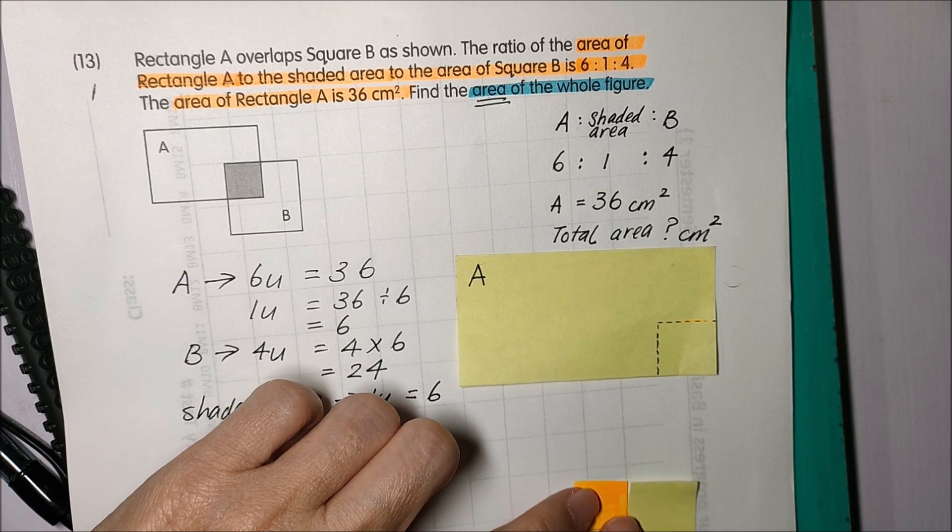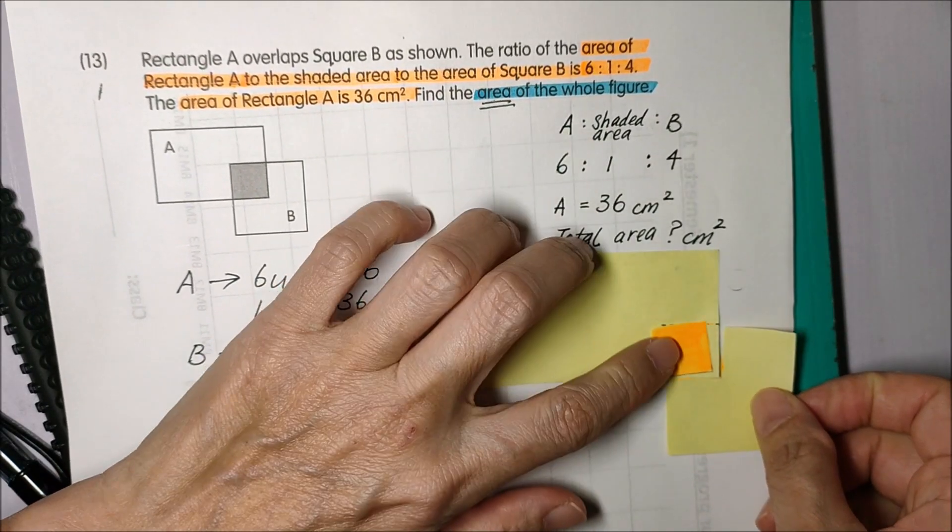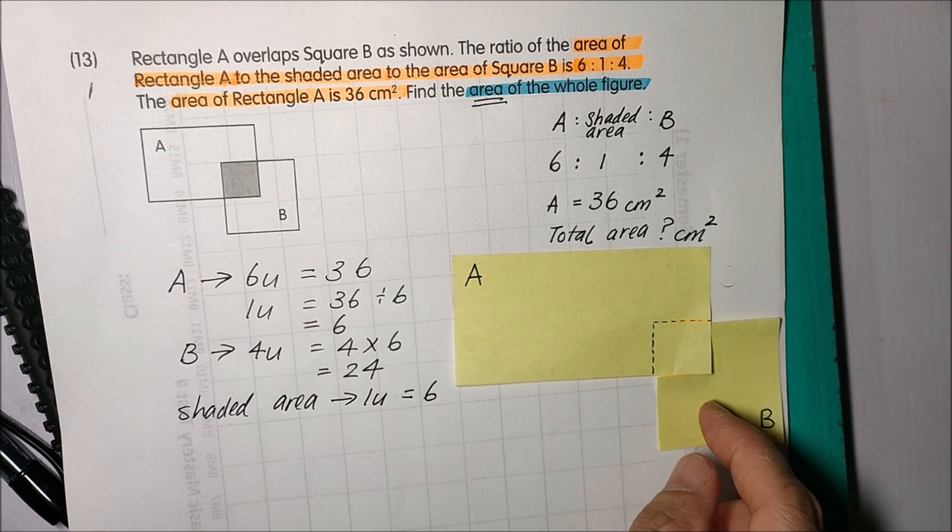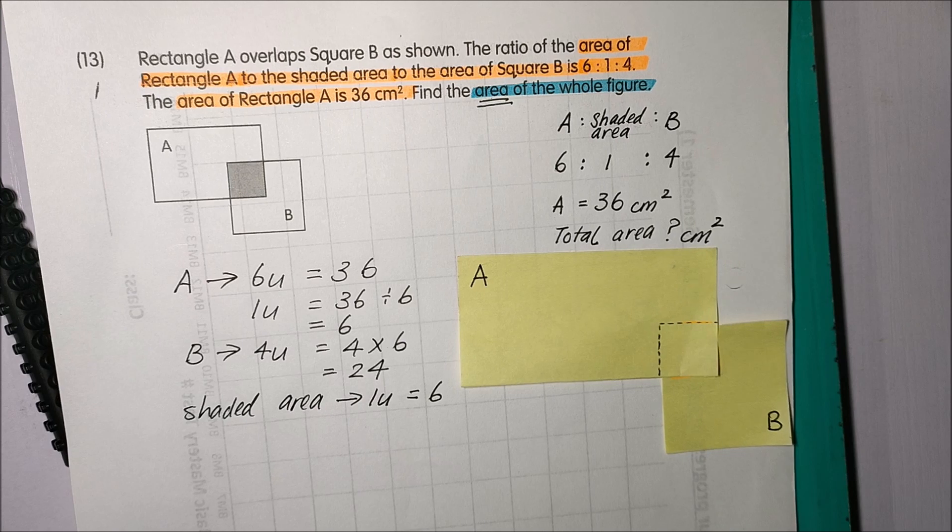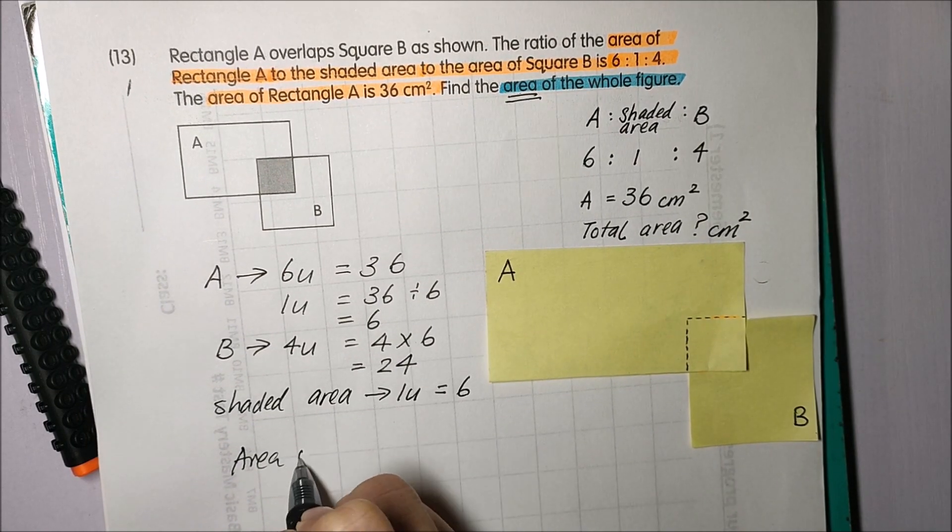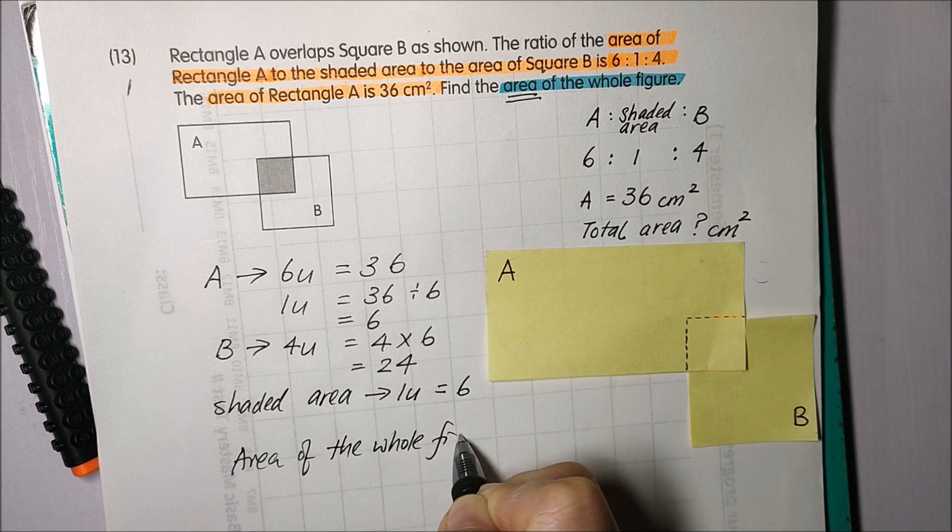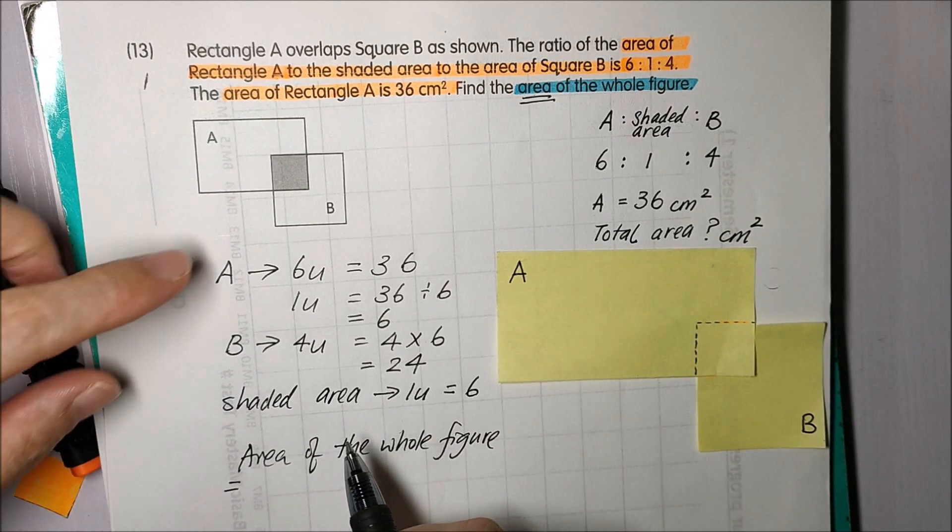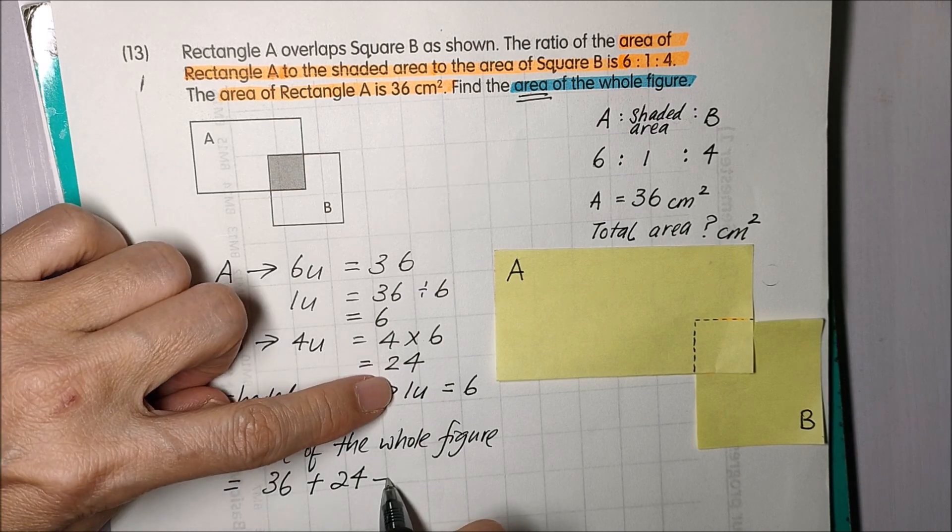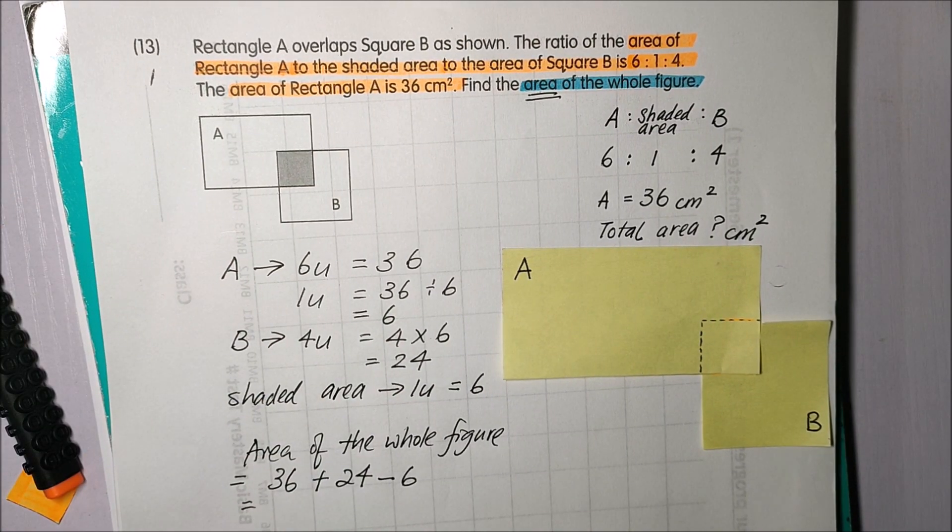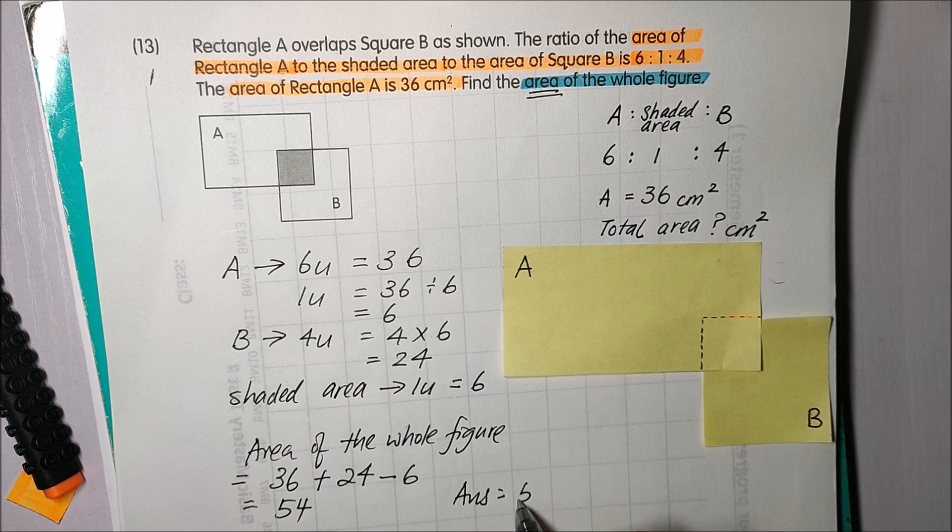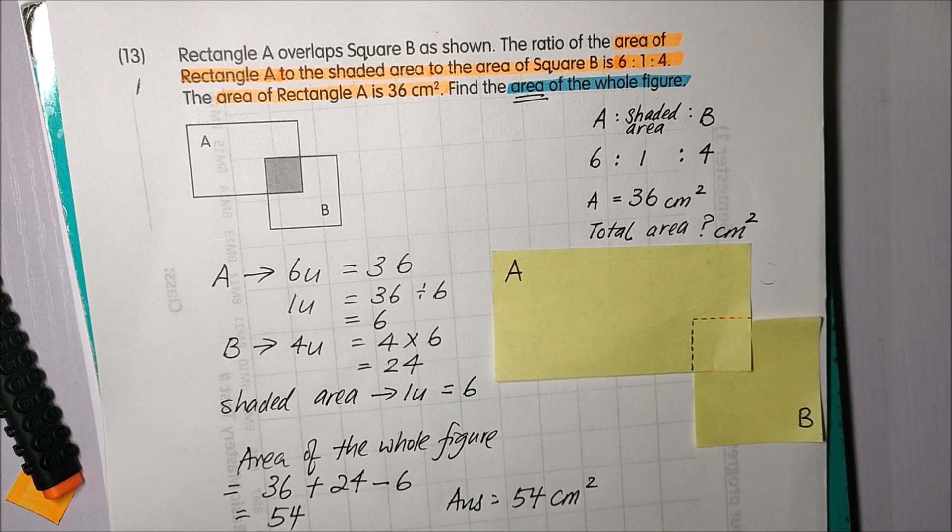That will be the area of my figure. Therefore, area of the whole figure will be area A, 36, plus area B, 24, minus away my shaded part which is 6. That will give me 54. So my answer will be 54 cm squared or square centimeters.